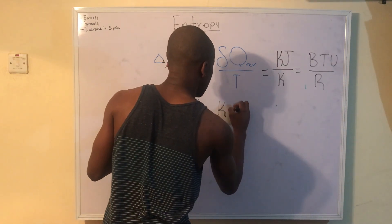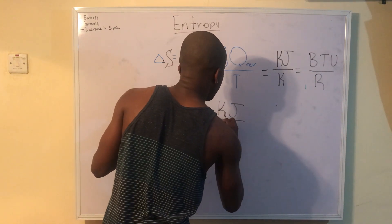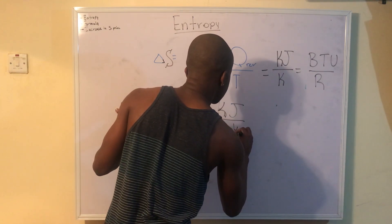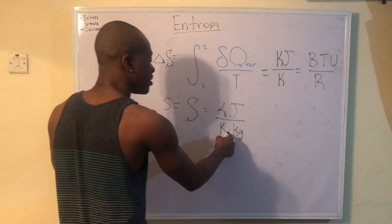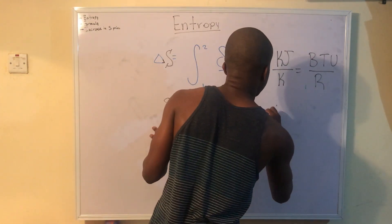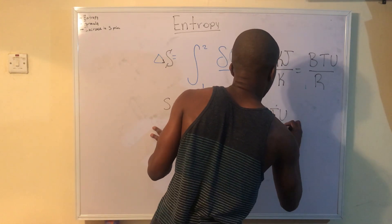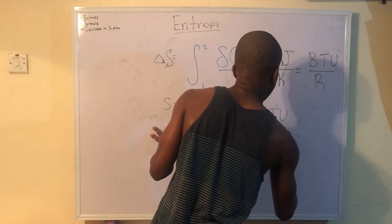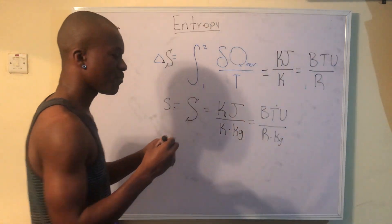For specific entropy, the units are kilojoules per Kelvin per kilogram — kilograms on the bottom — or you might have BTU per Rankine per kilogram. Pretty straightforward.